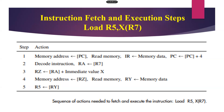Step one is the same: the content of the program counter will be moved to memory address, a read signal is issued, and after some fraction of time the memory operation is completed. The instruction is then moved to IR with the help of the memory data register. Once the instruction is moved to IR, the program counter will be incremented by 4 automatically. Step two: the IR decodes the instruction — how many operands are available, how many source and destination operands. The source is the R7 register, so we get the content of R7 and transfer it to temporary register RA. But the data is not yet available.